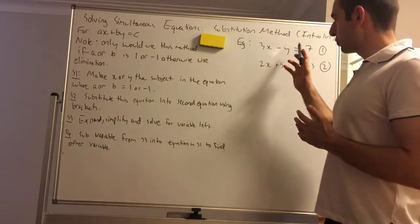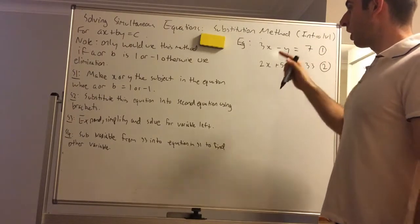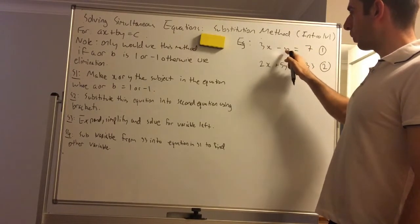You can use substitution in any, but substitution may be quicker here. So we've got 2 and 5, we can't make any of the subjects. So because we've got negative 1 here, we can make y the subject.